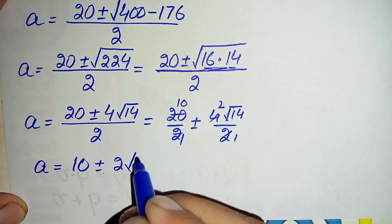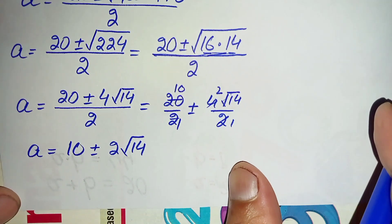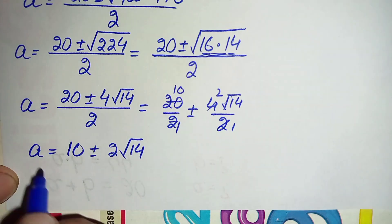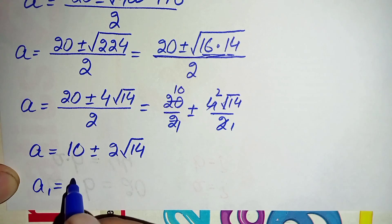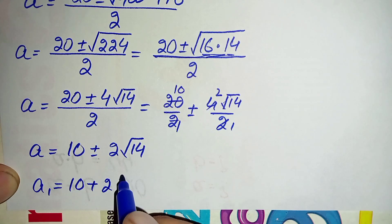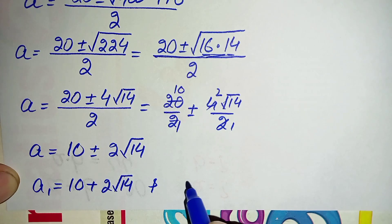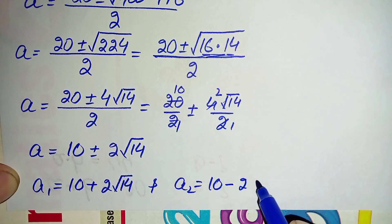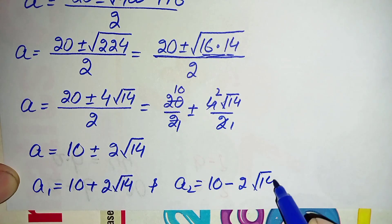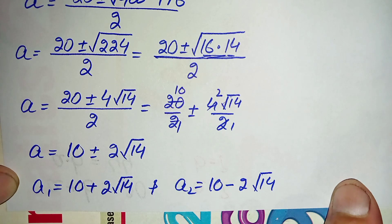So the value of a is 10 plus or minus 2 times the square root of 14. This gives two possible values: a1 = 10 plus 2 times root 14, and a2 = 10 minus 2 times root 14.